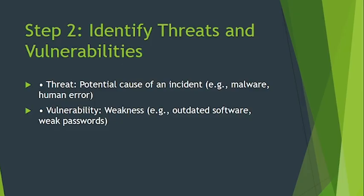For example, if you are using an old version of WordPress for website development, that old version is a vulnerability, and hackers exploiting it is the threat. To identify threats and vulnerabilities: identify common threats like malware, phishing, and ransomware; check whether your software is updated and look for misconfigurations; and perform a vulnerability scan using tools such as OpenVAS or Nessus. Document each threat-vulnerability pair.